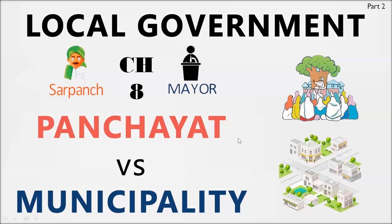Hello students, today we are going to study Chapter 8, Local Government, from our Class 11th Political Science textbook 'Indian Constitution at Work.' We have already studied about what local government is and the three-tier structure of our local government, the Panchayati Raj system. Now we will study about the 73rd Amendment and what changes it brought into the local government or the Panchayati Raj system.